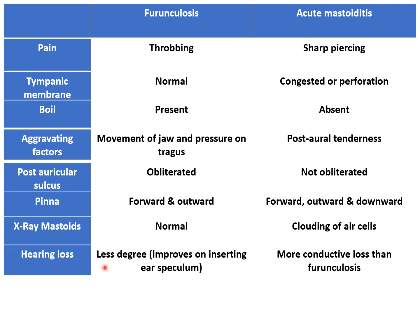Hearing loss is generally of a lesser degree in furuncylosis, caused by the edema or the furuncle blocking the external auditory canal. This loss is of conductive type and it improves on inserting an ear speculum, because the speculum opens the canal and the patient hears better. While in acute mastoiditis there is also conductive hearing loss, but it may be of a somewhat greater degree because the mastoid air cell system and the middle ear structures are involved.